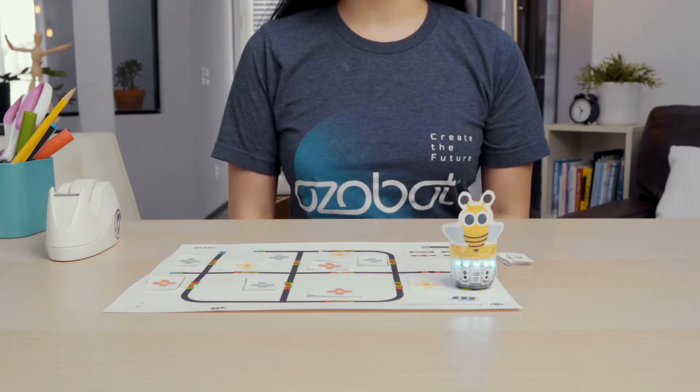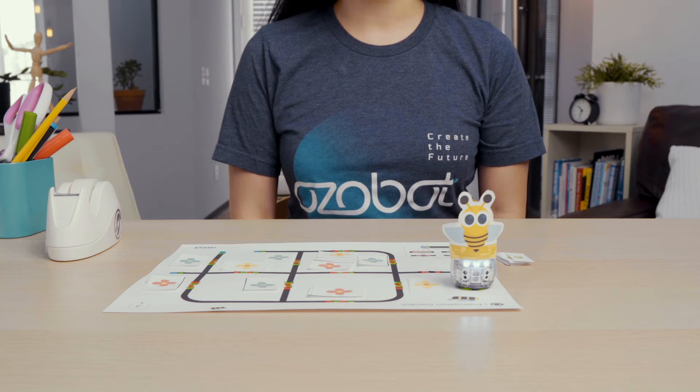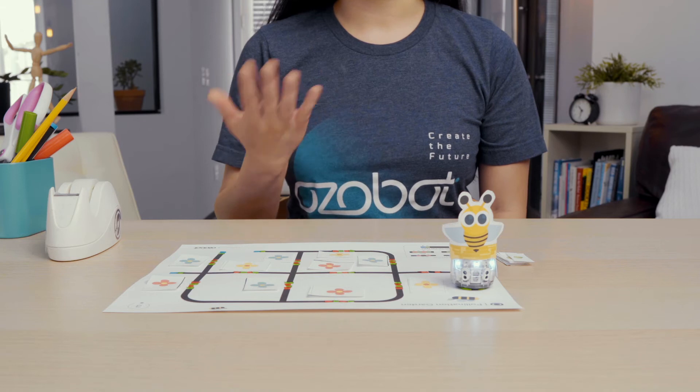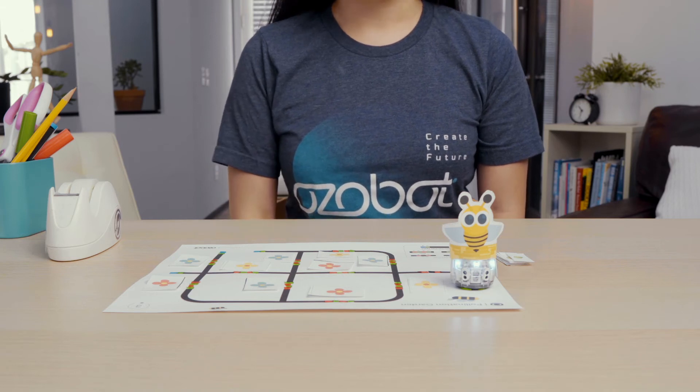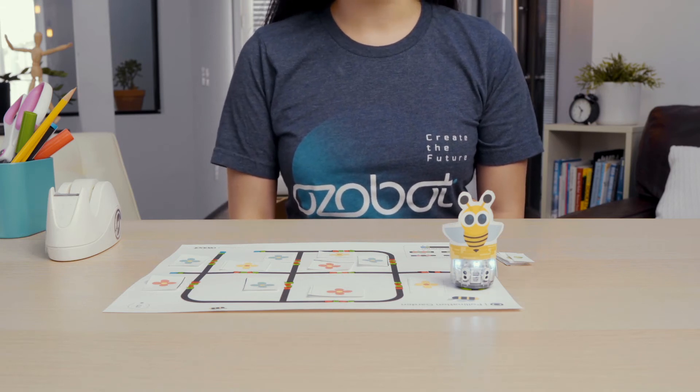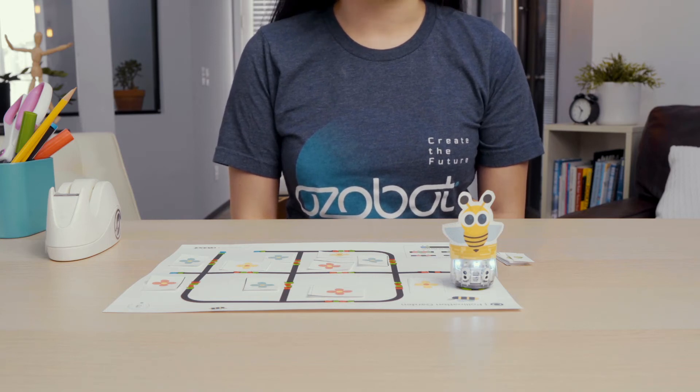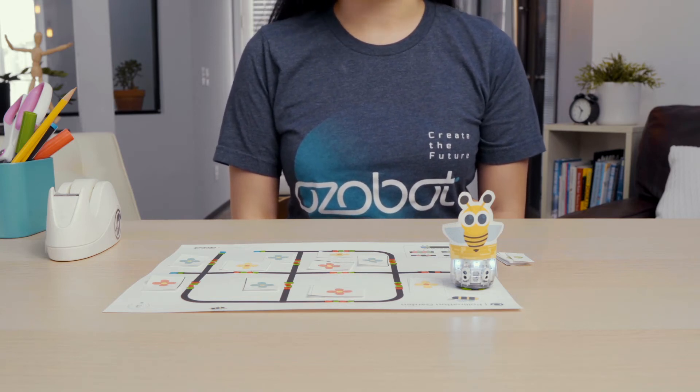Now that your garden map is complete and your pollinator bot is ready, it's time to test out your model. To test out your model, you will put your pollinator on start. Then you will watch your pollinator move to different flowers in the garden to see which flowers get pollinated. Let's look at mine in action.